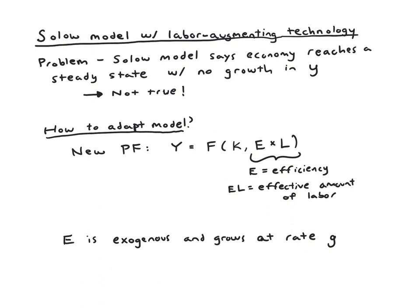And the way labor-augmenting technology works is that this new technology allows labor to have some level of efficiency. So instead of L, we're going to have E times L, where E stands for the efficiency of labor, and then we call EL the effective amount of labor.